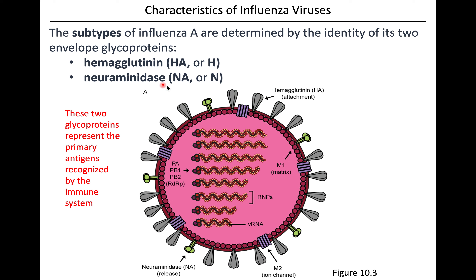And then the neuraminidase, or NA - or just N - which you see here in green. Primarily, HA is involved with attachment, and NA is involved with release. These are important designations as subtypes because, since they're on the surface of the virion, they are really the main antigens recognized by the human immune system. So if you have immunity or not to a specific subtype, it really depends on what those glycoproteins look like.